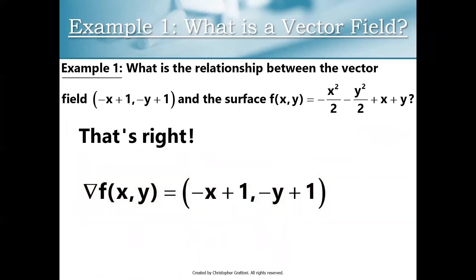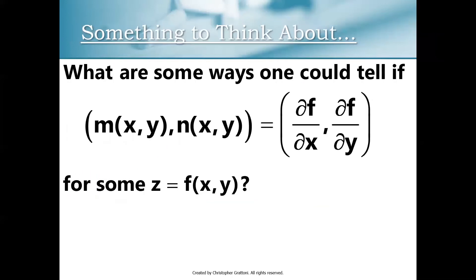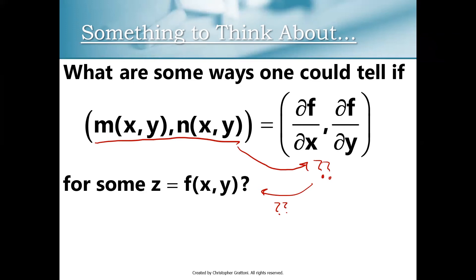You might have noticed that if you take the function f and compute its gradient, you get negative x plus 1 comma negative y plus 1. So this isn't just any old vector field — it's a gradient field, a vector field that has a surface associated to it through the gradients. It's worth starting to think about: if someone gives me a random vector field, how can I figure out if it is actually a pair of partial derivatives with a surface associated to it? We'll learn something called the gradient test next chapter that will give us a really nice framework for determining if our vector field is in fact a gradient field.